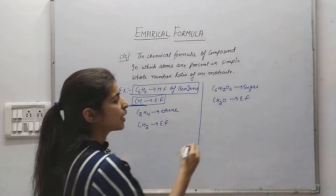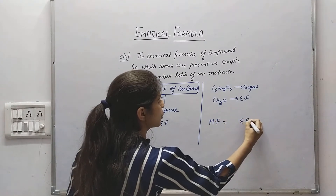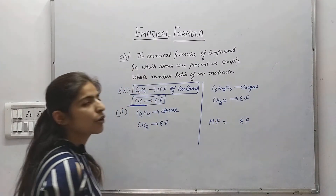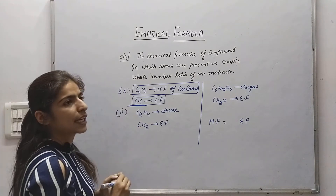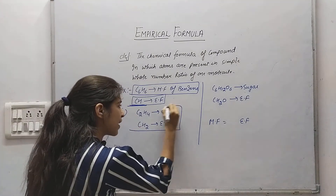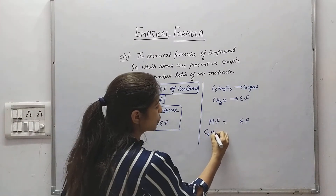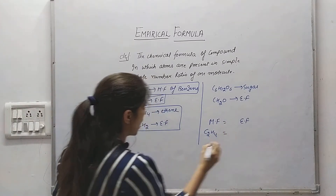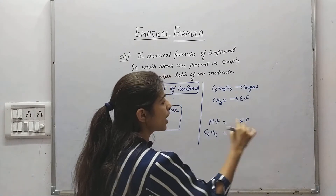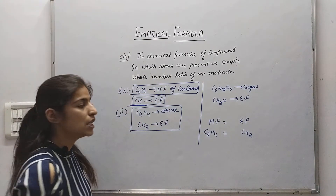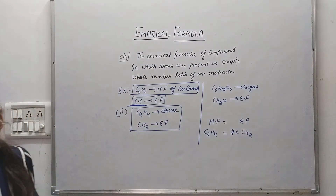Now let's look at the relation between molecular formula and empirical formula. For example, the molecular formula is C2H4 and the empirical formula is CH2. The molecular formula can be obtained by multiplying the empirical formula by 2, giving C2H4.